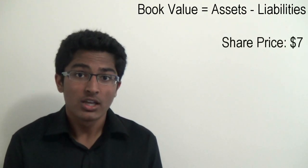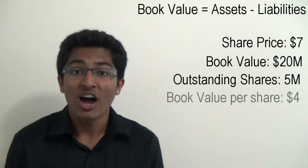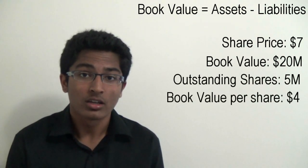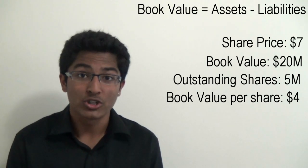Say the share price of a company is $7. Now their book value is $20 million and they have 5 million shares outstanding. This means that their book value per share is actually $4.